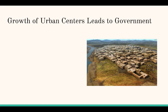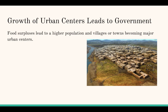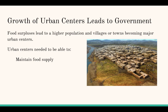As cities grow and population rises, they produce a food surplus — more food than people can eat — leading to a healthier population and more children. Villages and towns become major urban centers. Urban centers need to maintain the food supply, which means doing things like irrigation, overseeing crop rotation, and managing the collection, distribution, and long-term saving of crops through fallow seasons like winter.